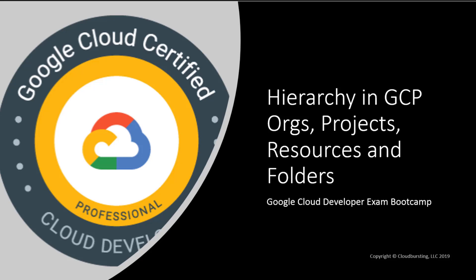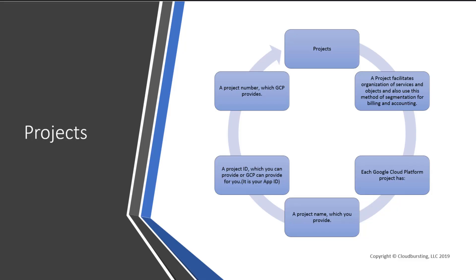Let's talk about the hierarchy in Google Cloud Platform, which contains organizations, projects, resources, and folders. When it comes to Google Cloud, the main facet that will facilitate the organization of your services is called a project. A project is meant to segment your resources, but also for billing and accounting purposes — it provides for what's called chargeback or showback in your organization. It also enables you to have all your projects be part of what's called an organization.